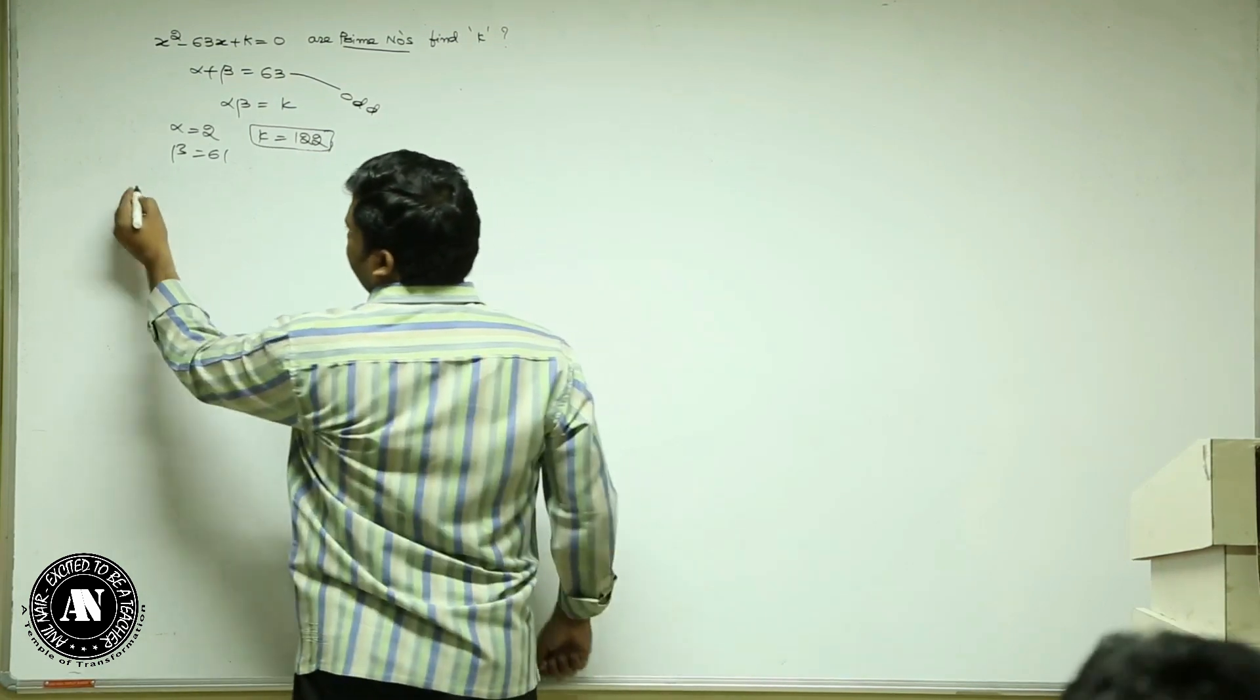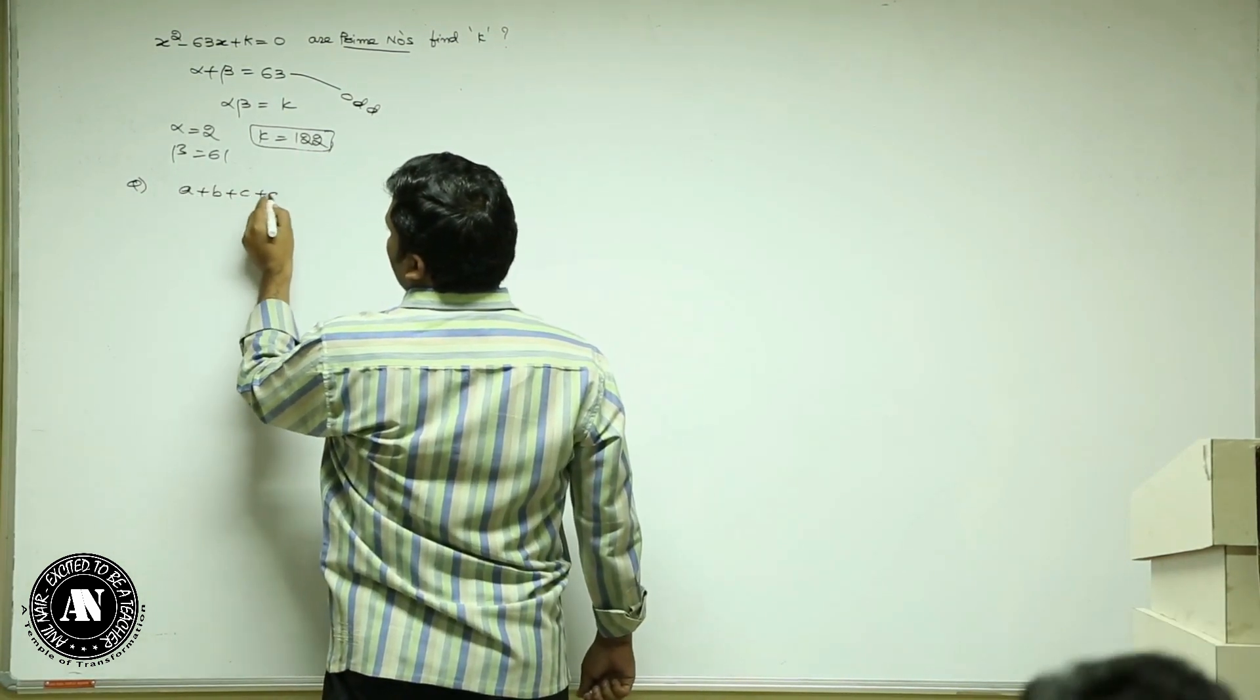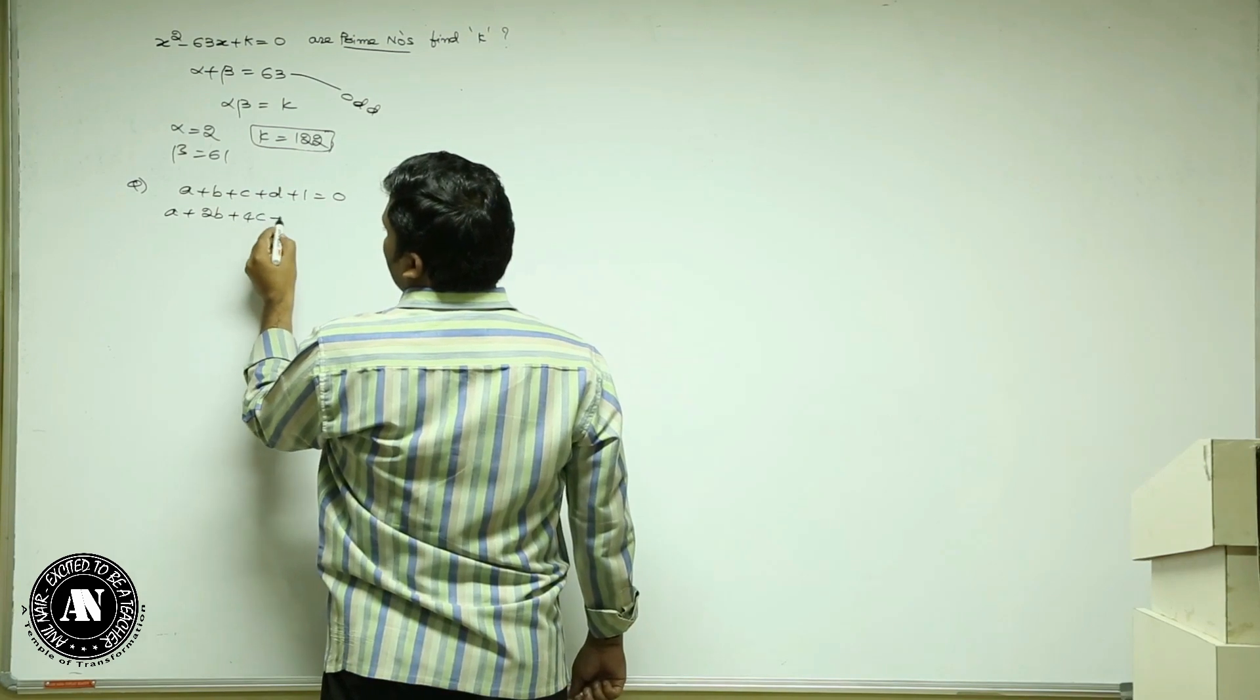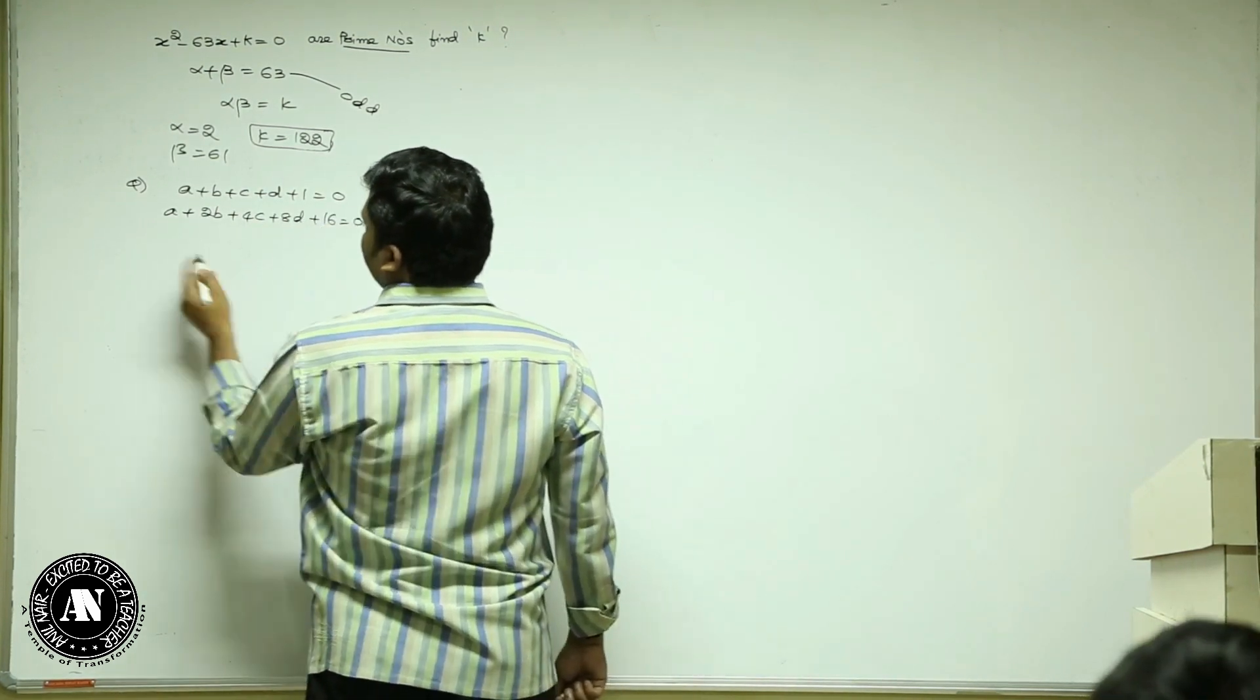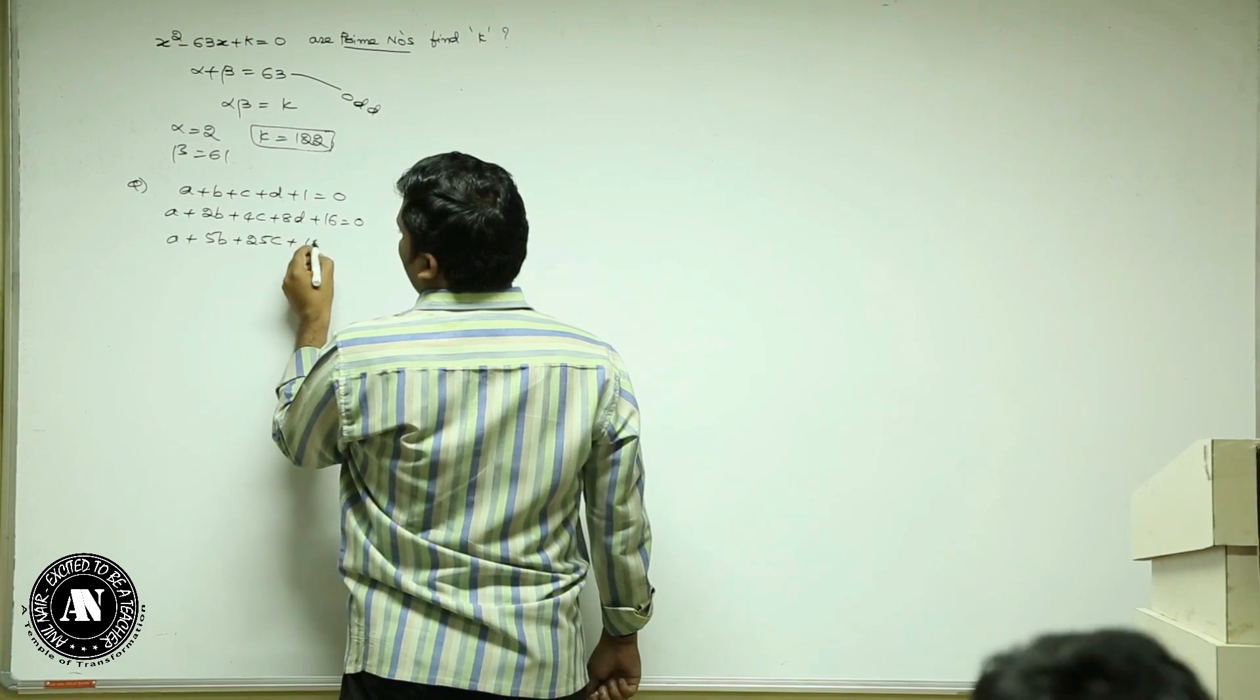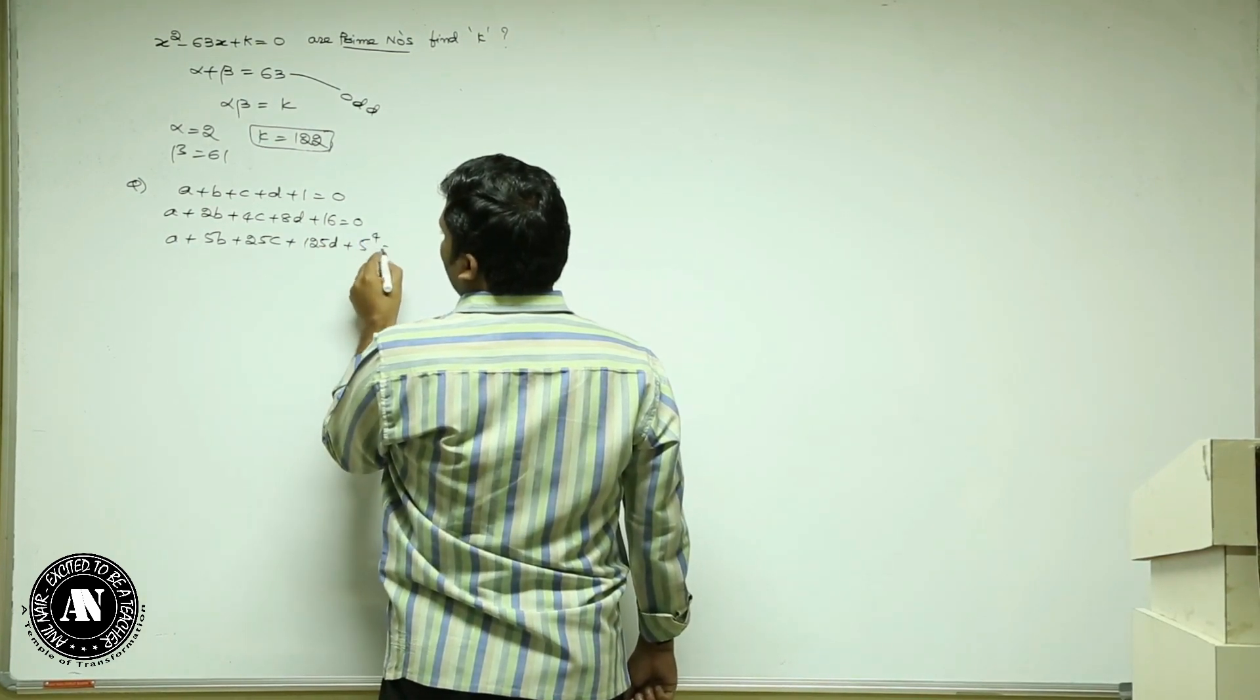This is a beautiful question. A plus B plus C plus D plus 1 equals 0. A plus 2B plus 4C plus 8D plus 16 equals 0. A plus 5B plus 25C plus 125D plus 5 to the power 4 equals 0.